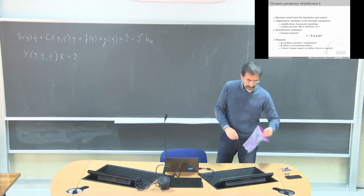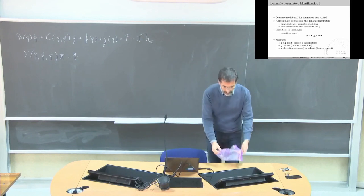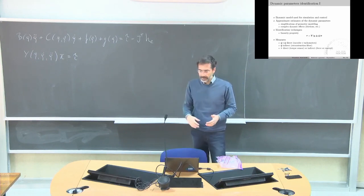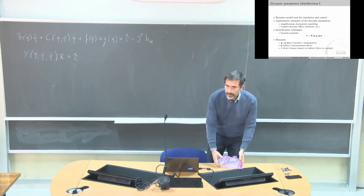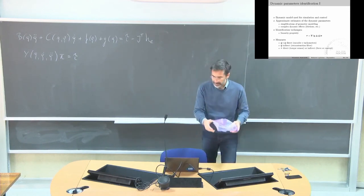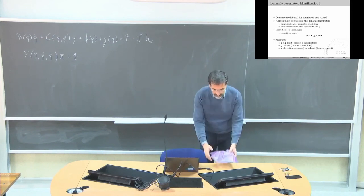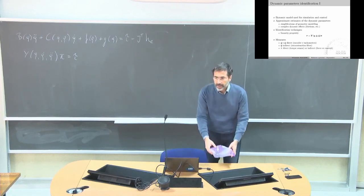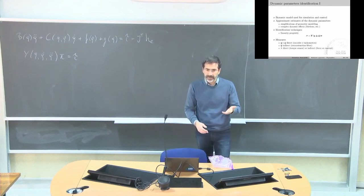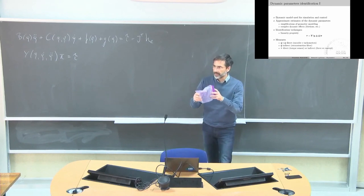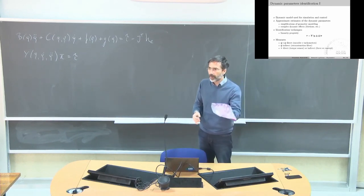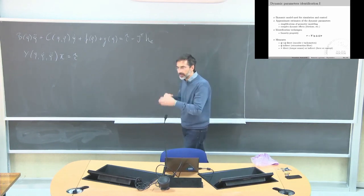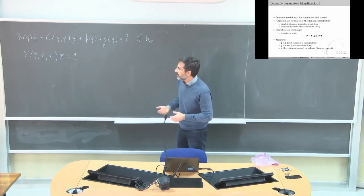Let me give you an example. Pretend this is a box — I want to lift it but I don't know what's inside; it could be empty or iron. If I know what's inside, my controller is much more efficient. If I want to follow a certain trajectory and I know exactly the weight, I can do it accurately. If I think it's heavy but it's empty, I overshoot because I have a wrong model of my plant.